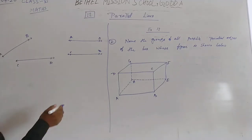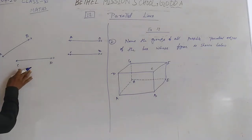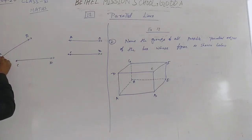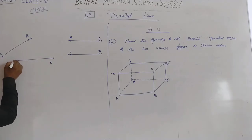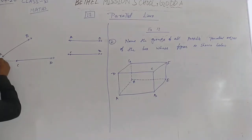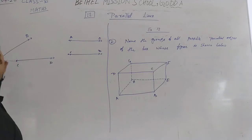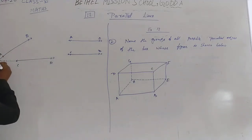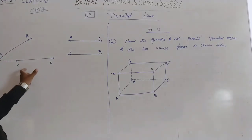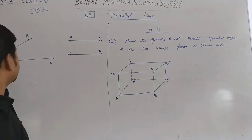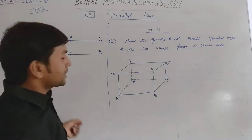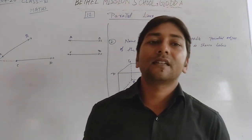Look carefully. When we extend AB to the left side and CD to the left also, then they meet at a point. Both lines meet at a point. When we produce AB and CD, they meet at a point — let's call it M. Both lines cut each other.